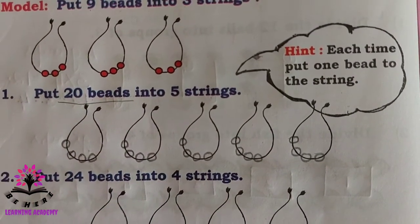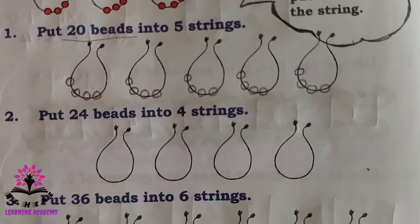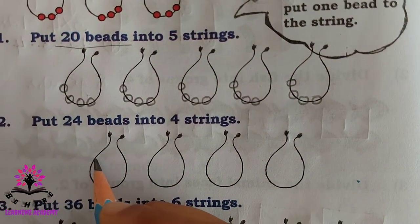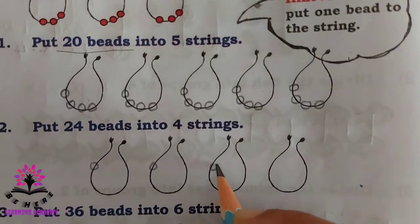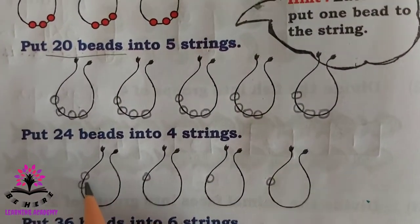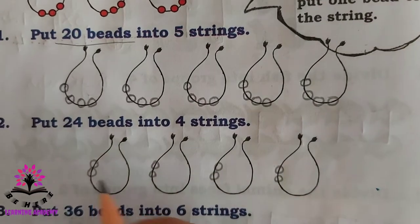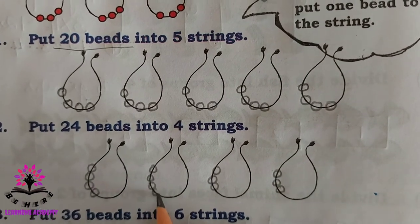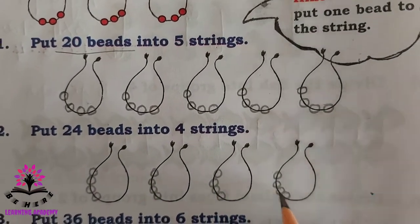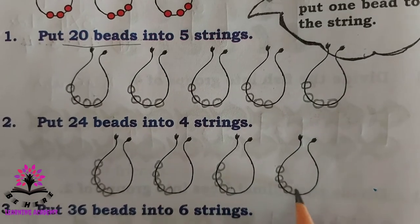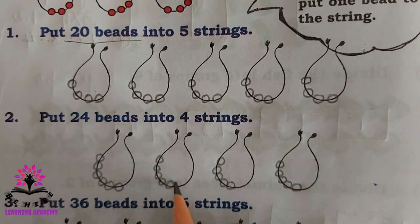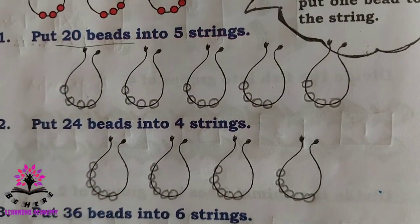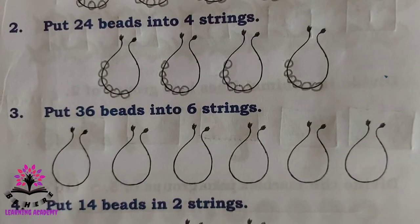Put twenty-four beads into four strings. Distributing one by one across the four strings — counting up to twenty-four. Each string ends up with six beads. So there are six beads in each string.